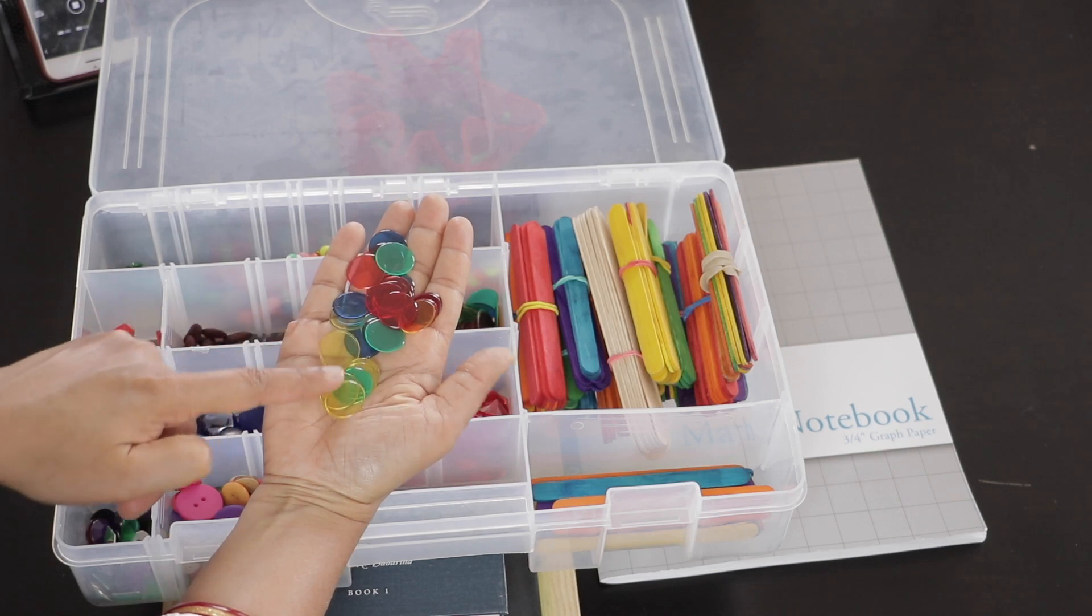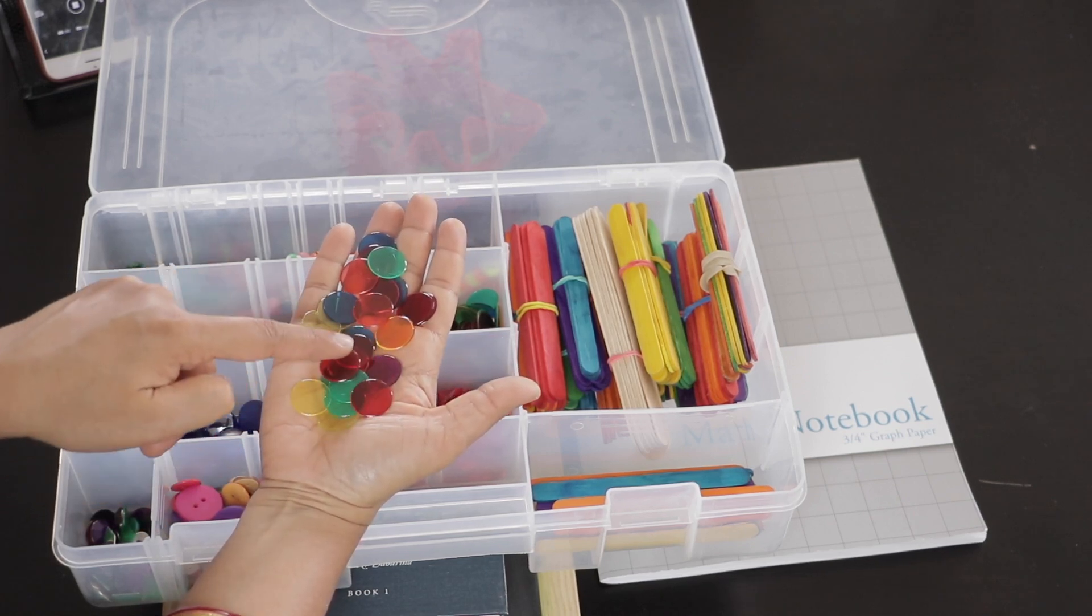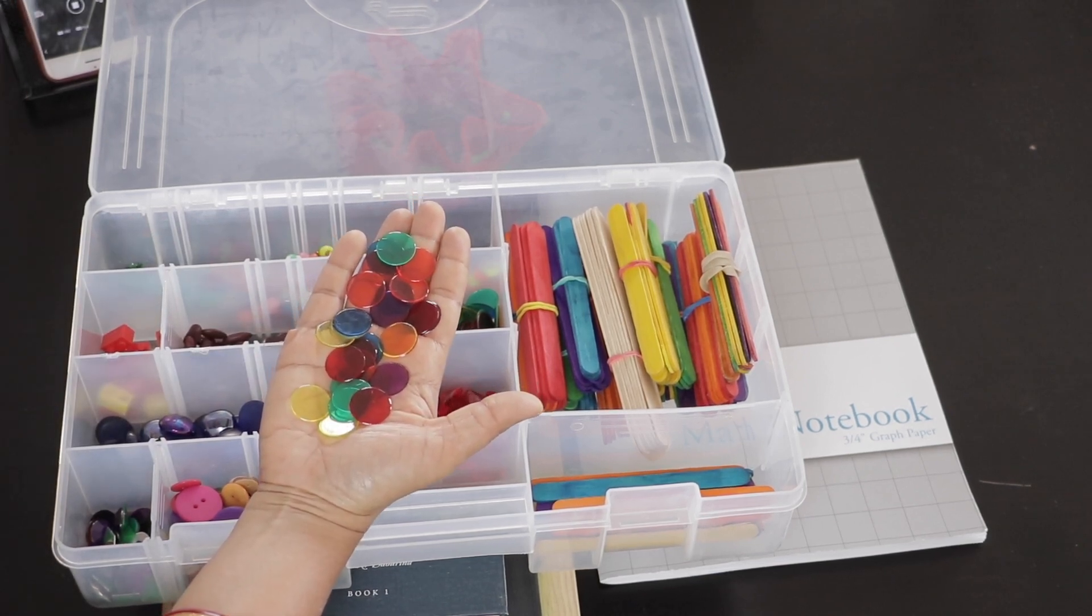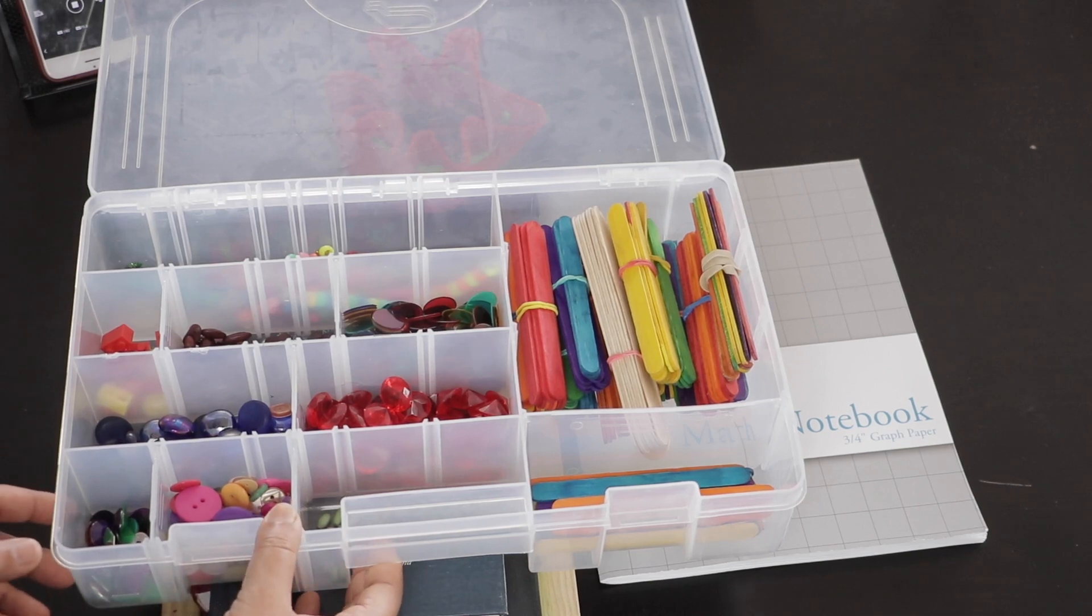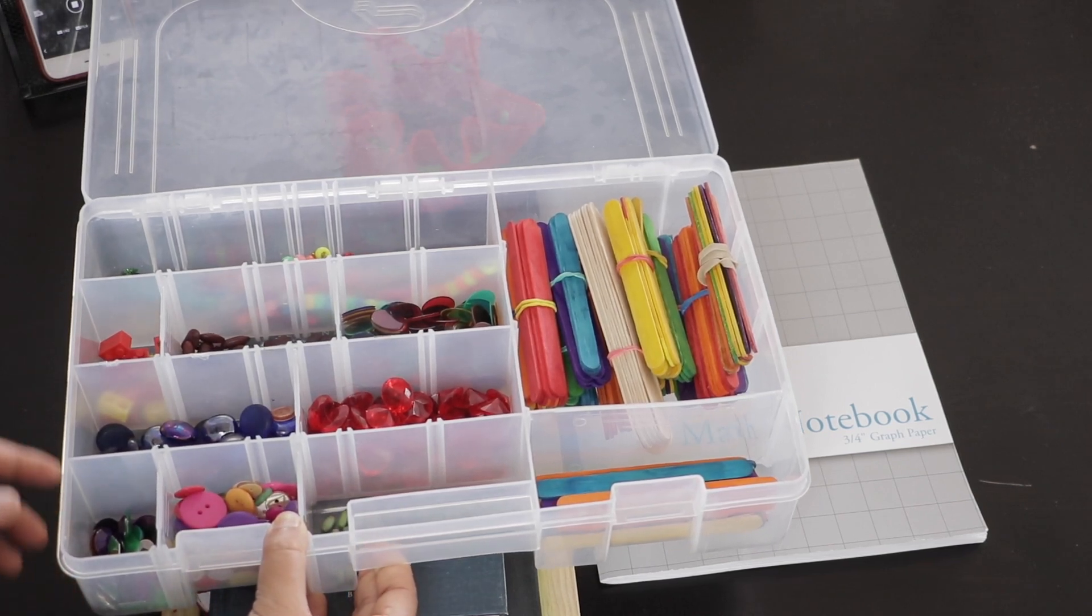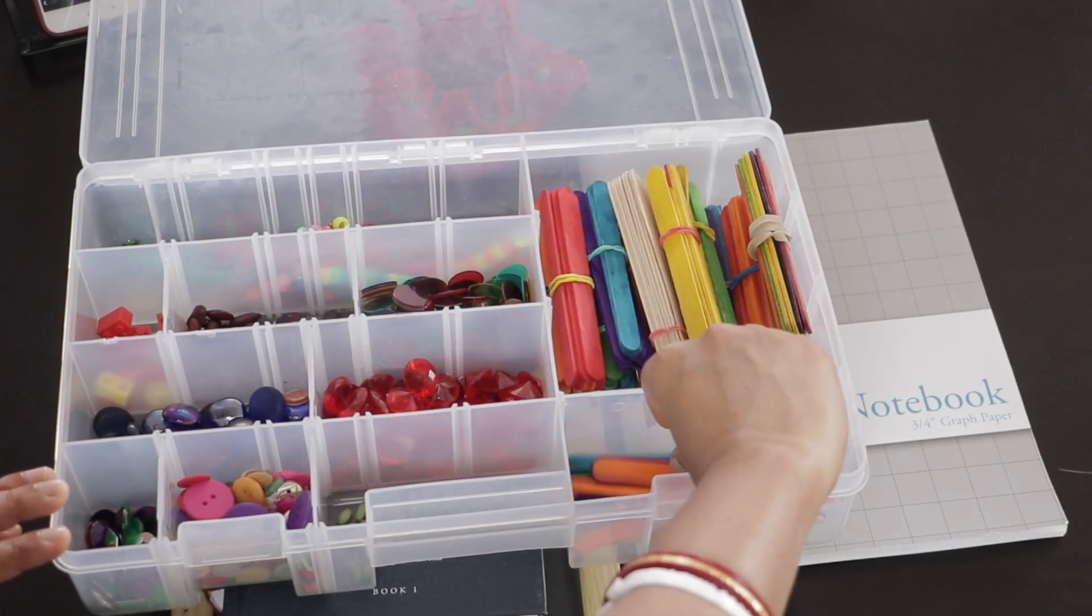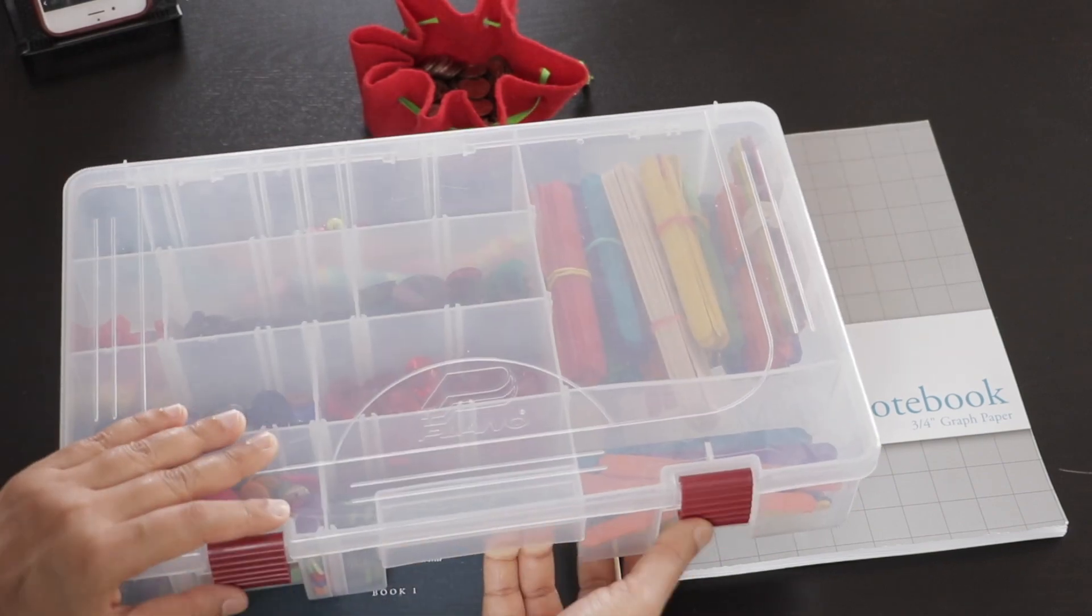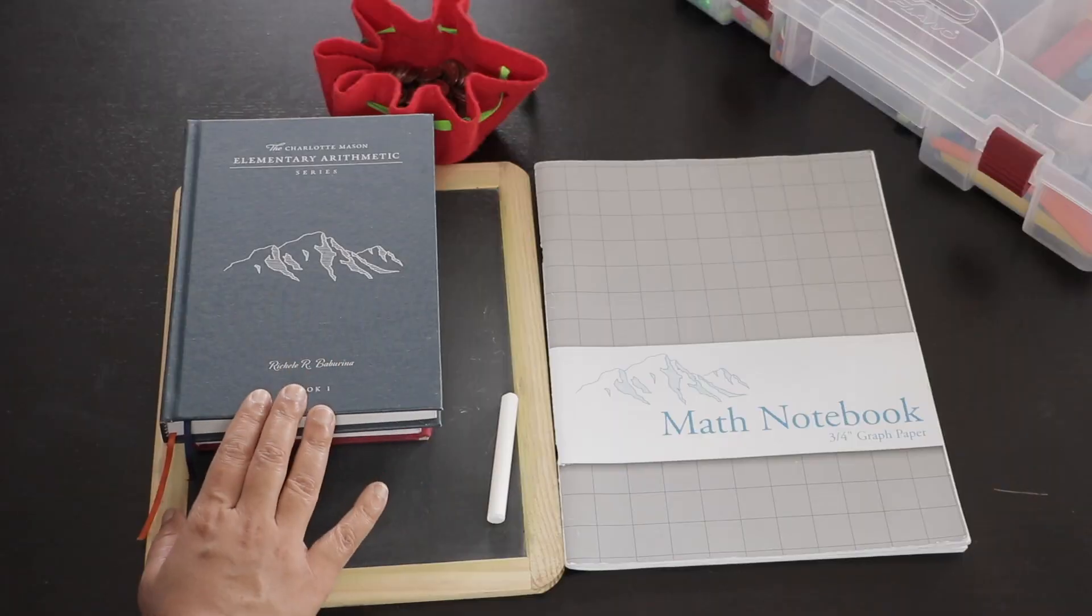And some colorful transparent counters. You can get anything that lies around the house and is easily countable. Just make sure the child does not play with them at other times, otherwise they will lose their interest in their lessons. I also have some single popsicle sticks for counting units. I make sure the manipulatives are really bright and colorful so my student gets really excited and happy about doing his math lessons.